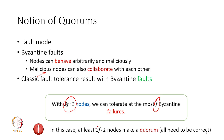In classical Byzantine fault tolerance, 2f+1 nodes make a quorum. All of them need to be correct and agree on the same consensus value. Even a classic centralized system — where the centralized server is guaranteed to be honest — can serve as a quorum: all nodes send a message to the centralized system and get a reply. A quorum is a set of nodes that must accept your write and provide you the value of a read. With 2f+1 as the minimum quorum size, you are guaranteed to get the correct answer back.